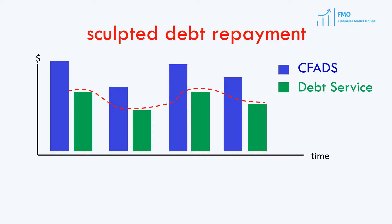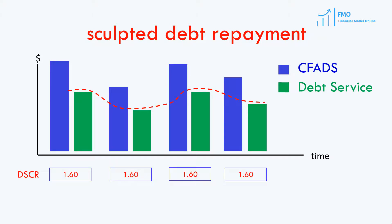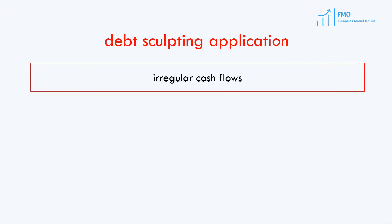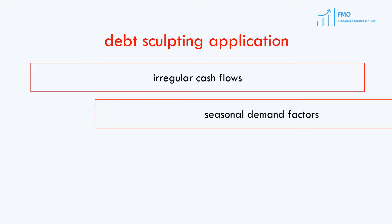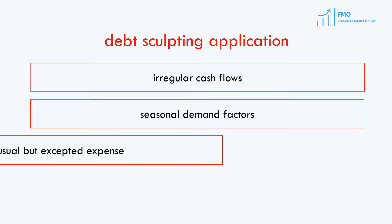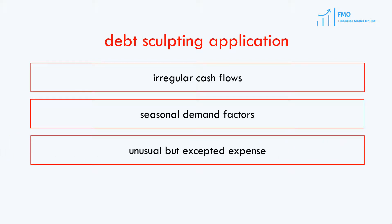Using debt sculpting, we can maintain the ratio between the CFADs and debt service constant, removing all the volatility. And that ratio is, of course, the Debt Service Coverage Ratio. Debt sculpting is generally applied when a project has irregular but well-understood cash flows, for example in oil and gas projects, or because of seasonal demand factors which is common in the power industry, or because of an unusual but expected payment such as a major overhaul of an asset.